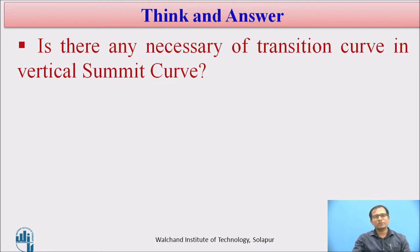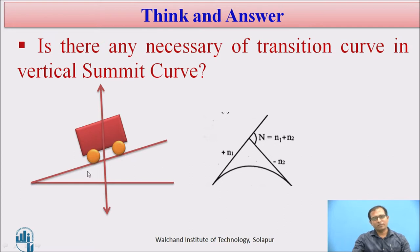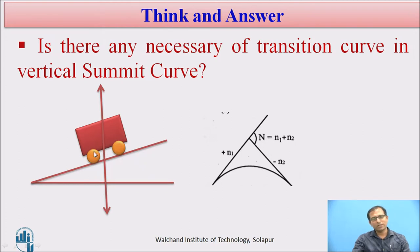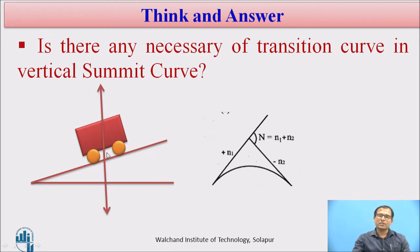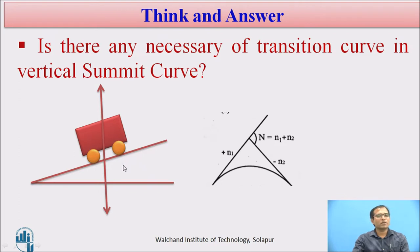The correct answer: looking at the diagram, the vehicle goes in the upward direction. The centrifugal force acts upward while gravity acts in the opposite direction. Because of this, part of the self-weight of the vehicle is relieved — the pressure on the tires and the stress on the suspension system are also reduced.